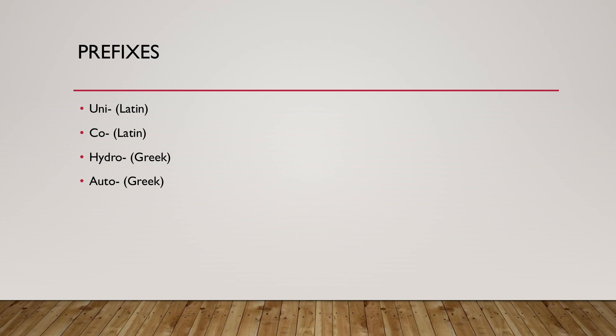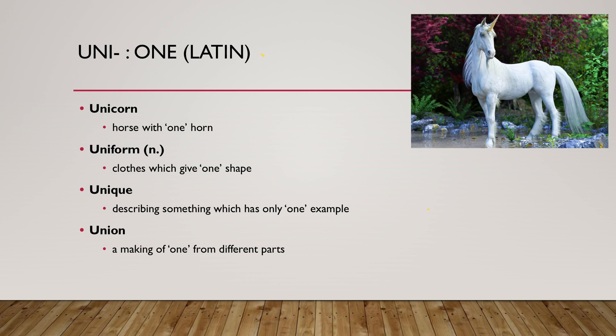Let's look at some Latin and Greek prefixes. The prefix 'uni,' which means 'one,' is an important prefix in the English language. Maybe the easiest way to remember that uni means one is through the word unicorn — a magic horse that has one horn. The word uniform means clothes which give one shape to all. The word unique describes something which has only one example. And the word union means the making of one from different parts.